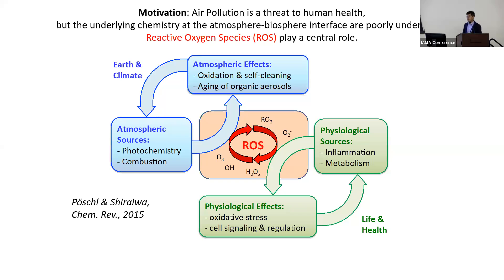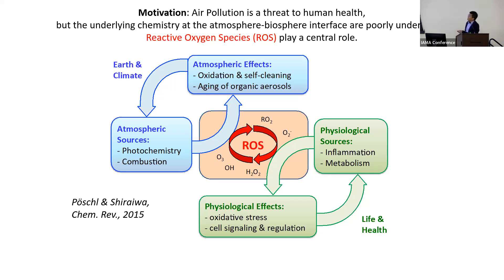The motivation is that air pollution is a threat to human health, but what is the underlying mechanism? One plausible hypothesis is that reactive oxygen species — ROS — play a central role. ROS is an umbrella term including ozone, OH, superoxide, and RO2 radicals. As atmospheric chemists we know ROS plays an important role in the atmosphere, generated by photochemistry and combustion, driving oxidation, cleansing of the atmosphere, and aging of organic aerosols.